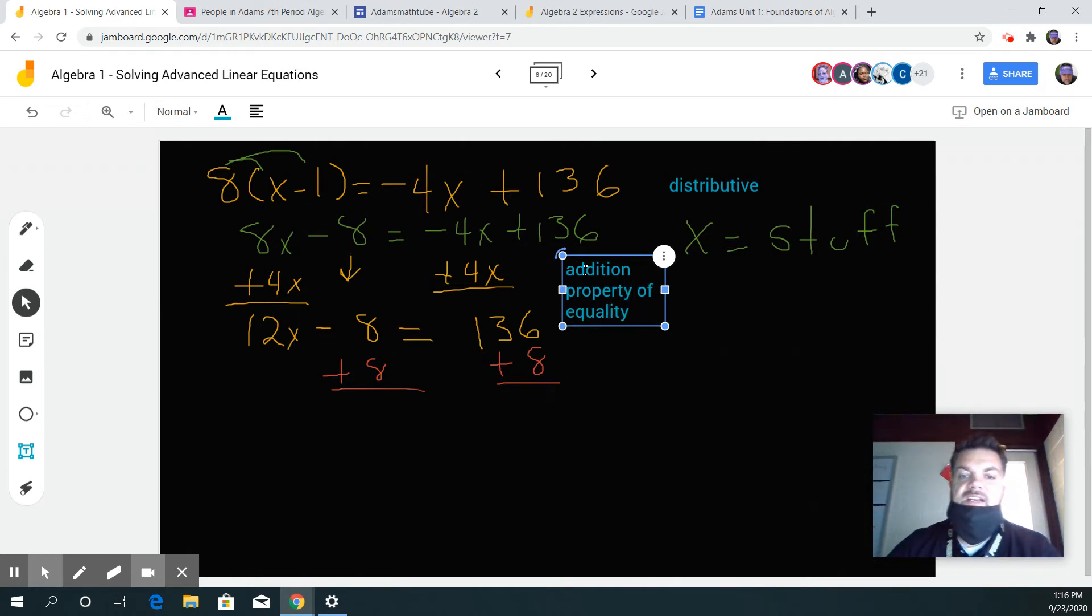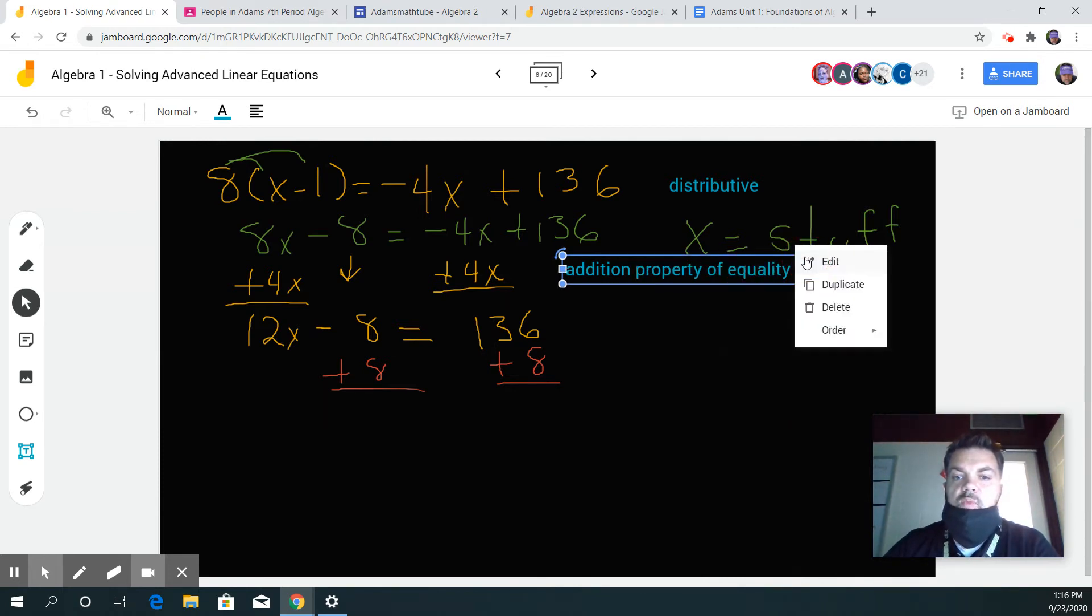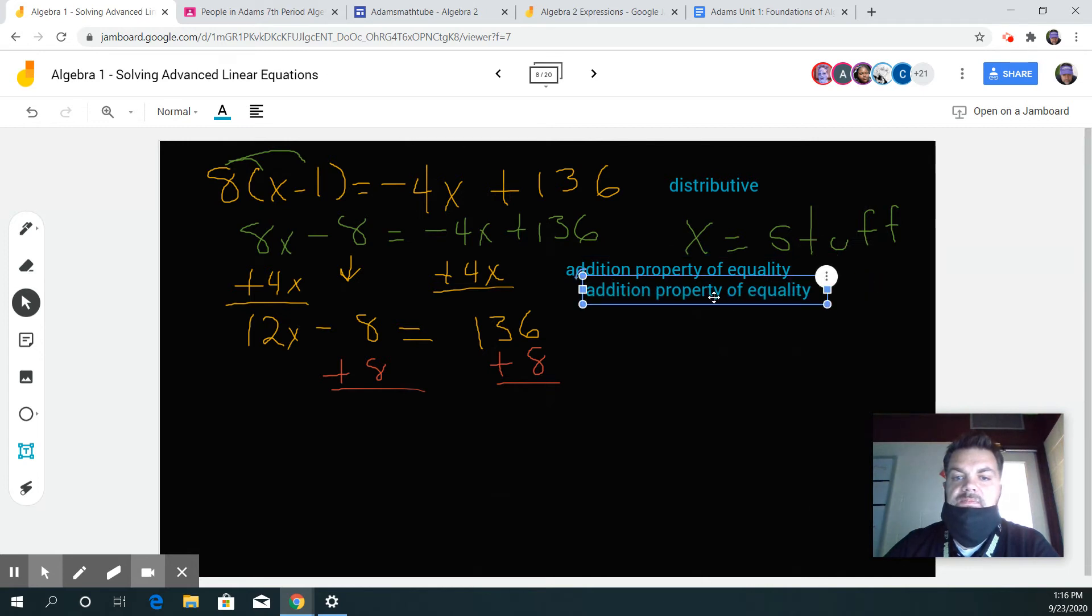Whatever I did on one side of the equal sign I had to do to the other. And what did I use a second time? The addition property of equality. That's kind of an important thing in this lesson.